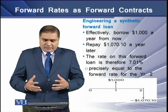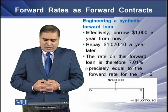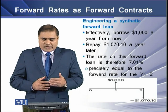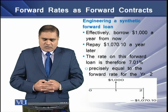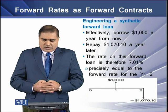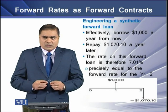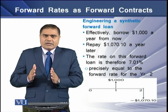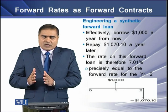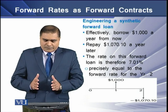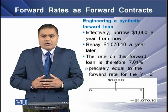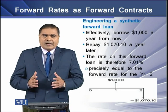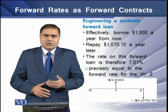Effectively, we are borrowing one thousand dollars a year from now, then repaying at a growth factor of 1.0701 a year later. This means the rate on this forward loan is therefore 7.01 percent, which is precisely equal to the forward rate for year two. From the graph, at year one we receive the one thousand dollars, and at year two we multiply this value by the growth factor, with the net value of these cash flows equal to zero.